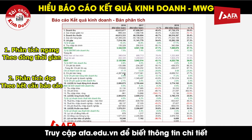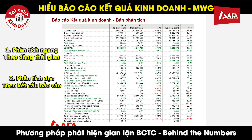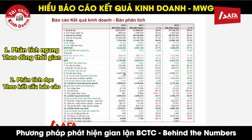Kỹ thuật thứ hai là kỹ thuật phân tích dọc, tức là sử dụng kỹ thuật phân tích kết cấu. Chúng ta tính toán tỷ lệ các chỉ tiêu trọng yếu trên báo cáo kết quả kinh doanh so với doanh thu thuần. Chúng ta sẽ thấy các chỉ tiêu màu xanh đã được đưa vào để đánh giá tỷ trọng so với doanh thu thuần, và bây giờ chúng ta đi tìm hiểu từng khoản mục kinh doanh của công ty cổ phần Thế Giới Di Động.